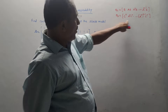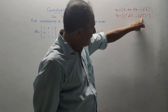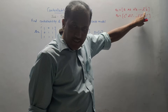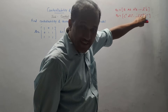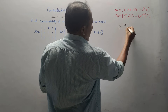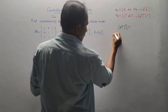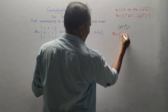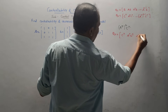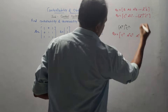Now let us check the observability of this system. To check observability, I need to calculate Q0 with the format: C transpose, A transpose C transpose, and the last element A transpose raised to N minus 1 into C transpose. Value of N is 3, so the last element is A transpose raised to 3 minus 1, i.e., A transpose squared C transpose. So the generalized format for Q0 is: C transpose, A transpose C transpose, then A transpose squared C transpose.